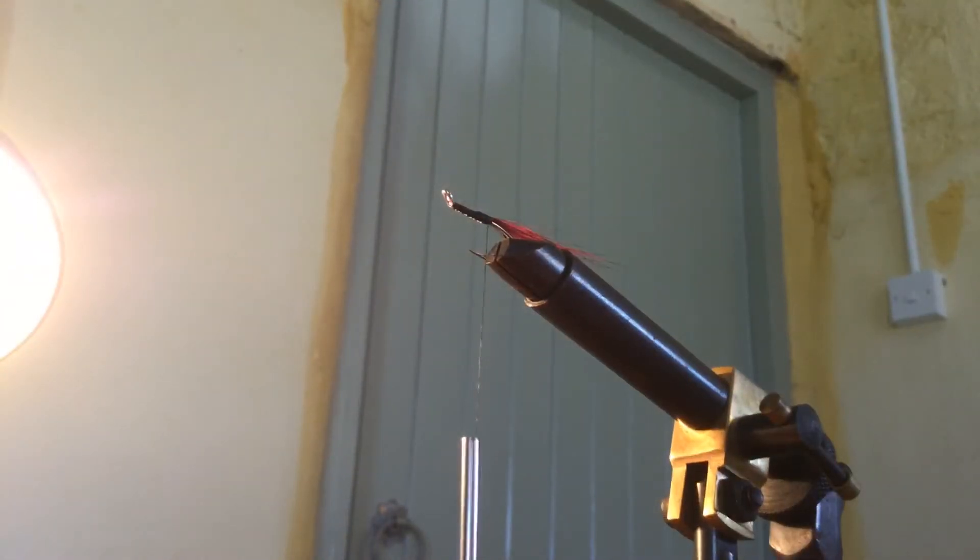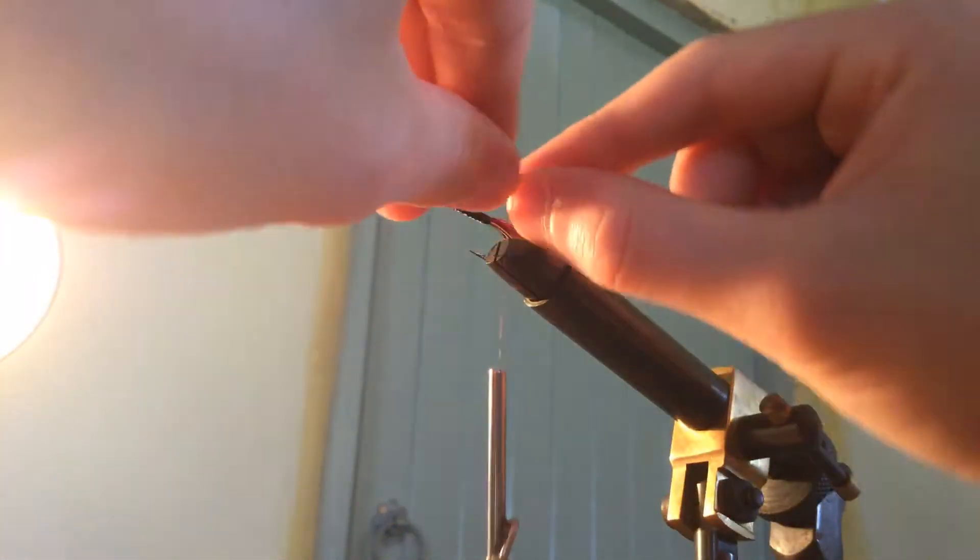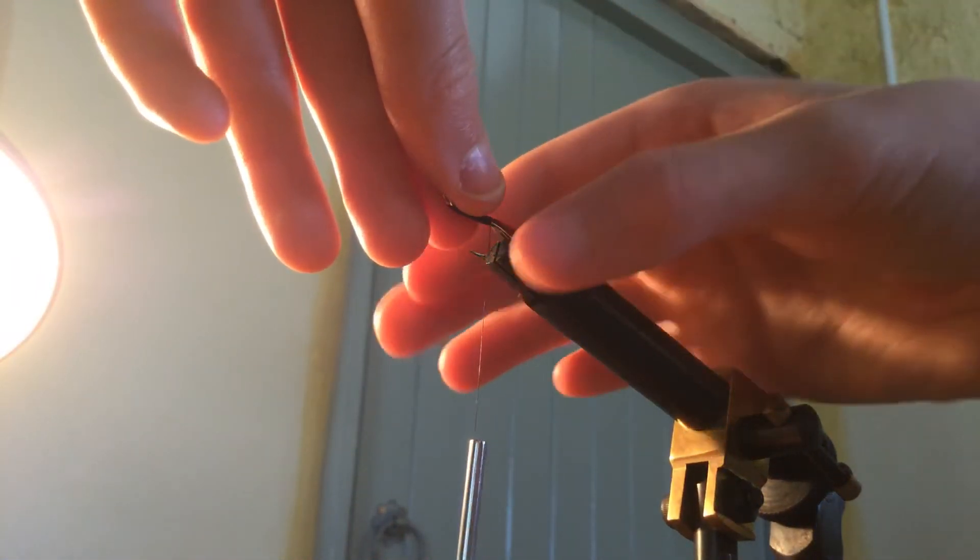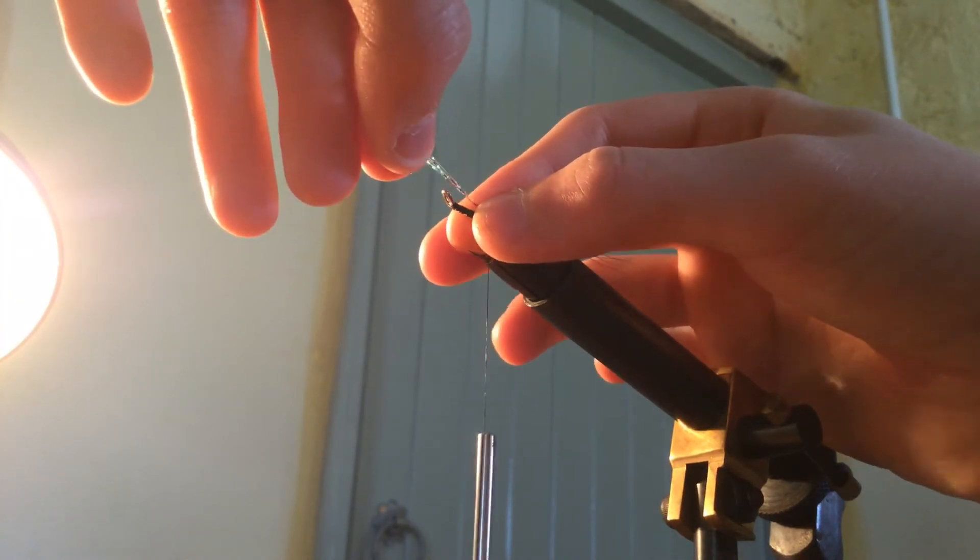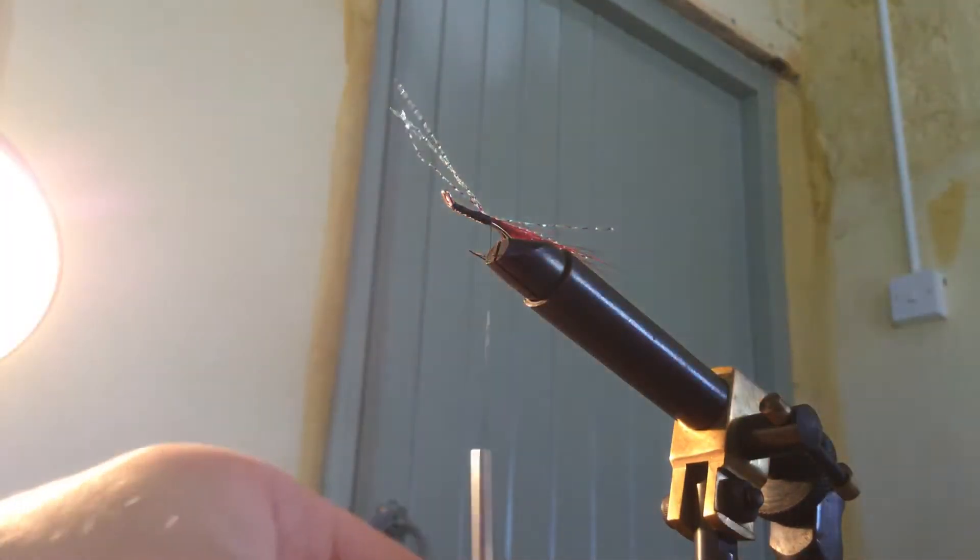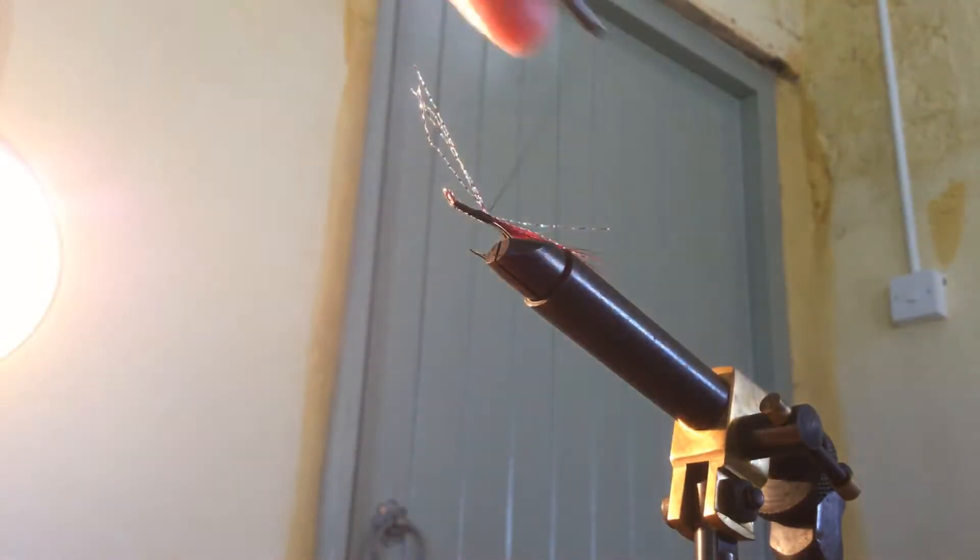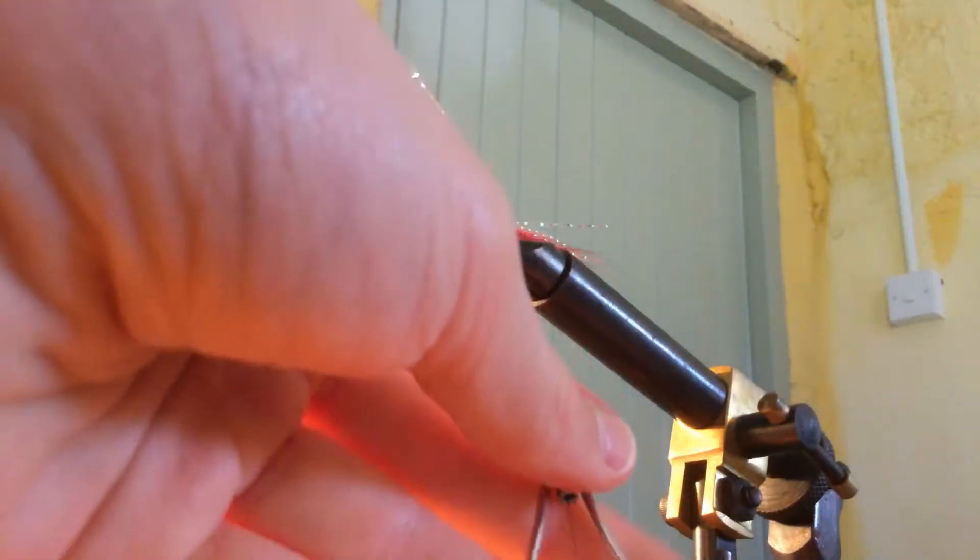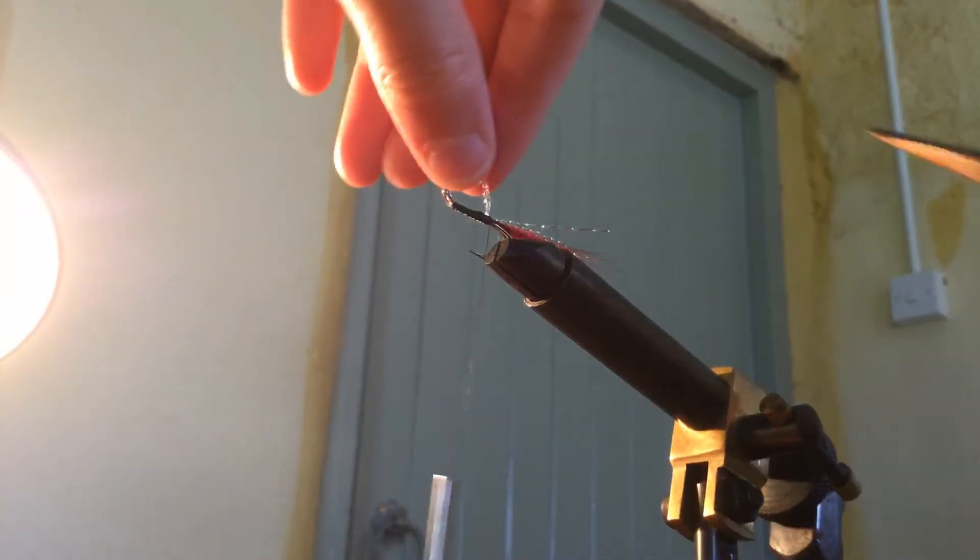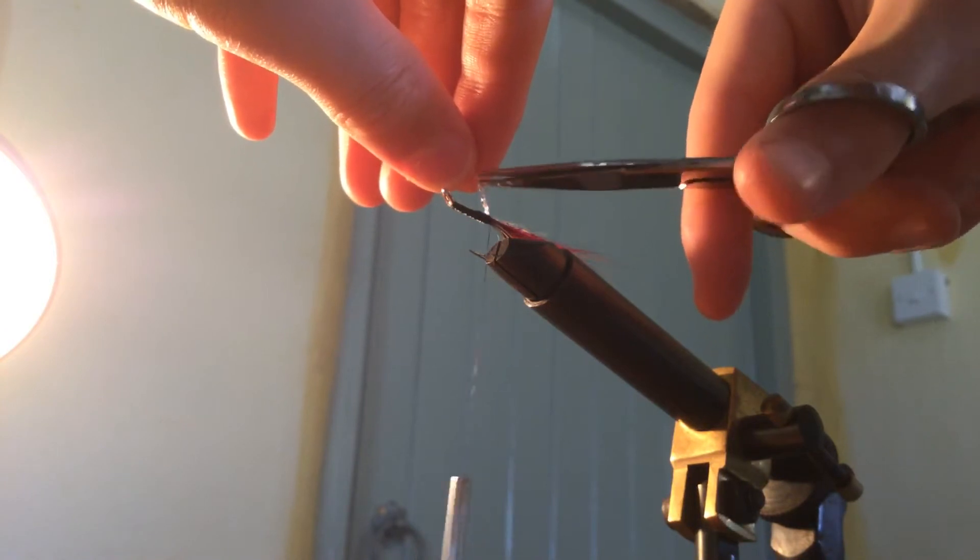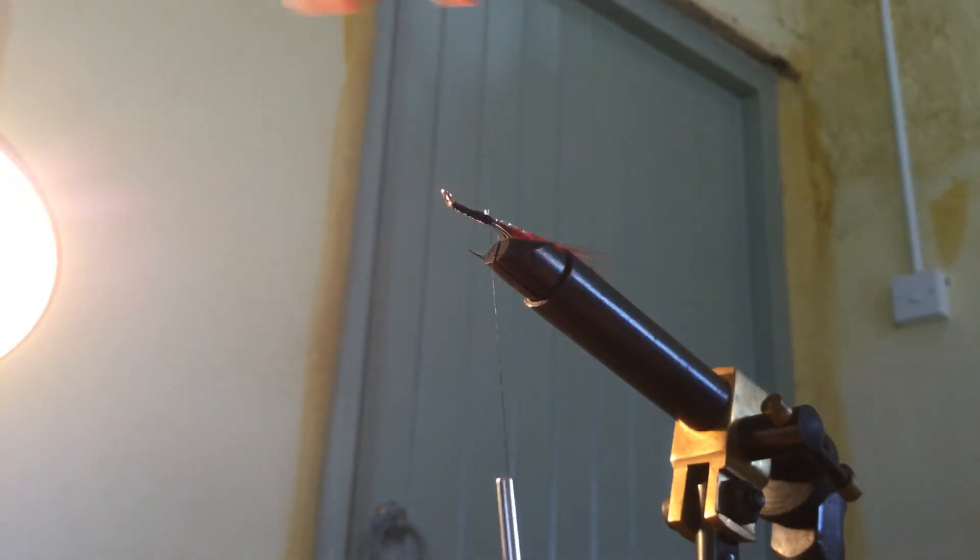I'm just going to snip that. The good thing about crystal flash is that you don't need to chop the whole thing off. Bucktail, you usually have to snip the whole thing off because it means there's no little stubbly bits at the end. But with crystal flash, it doesn't matter. It doesn't affect how the fly swims in the water. So now we've put on the crystal flash.